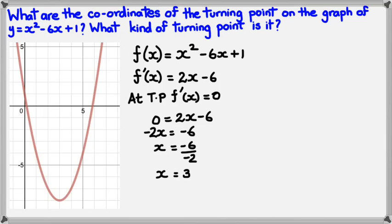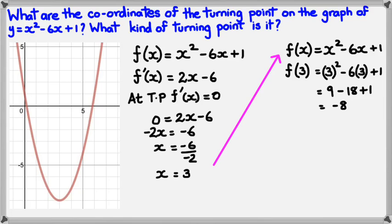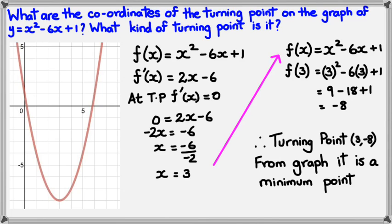Now we need the coordinates of the turning point, so we need to figure out when x equals 3, what's the value of y? So we've got f of x, which is x squared minus 6x plus 1, and we're going to work out f of 3. So f of 3 is 3 squared minus 6 times 3 plus 1, which simplifies to negative 8. So we have the coordinate 3, negative 8, which is where the turning point is. From the graph, we can say that it is a minimum point because the gradient is changing from negative to a positive gradient.